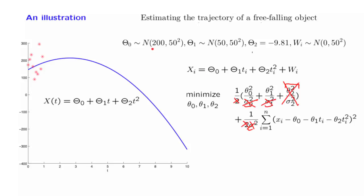Finally, just in order to get a nicer illustration, instead of taking 0 means, we're assuming that the initial position has a mean of 200. So we're starting somewhere around here. And furthermore, the initial velocity has a mean of 50, so we expect the object to start moving upwards. How does this change the formulation?